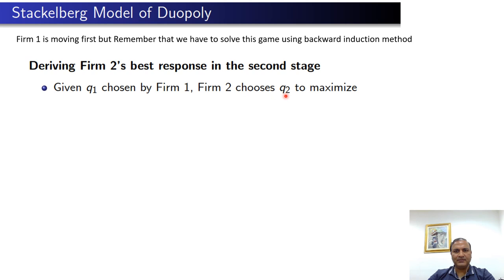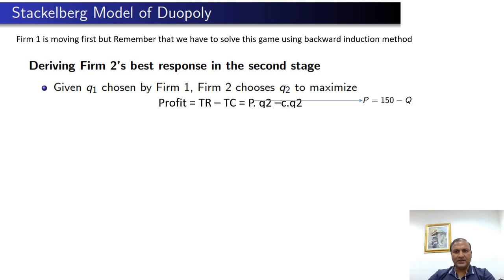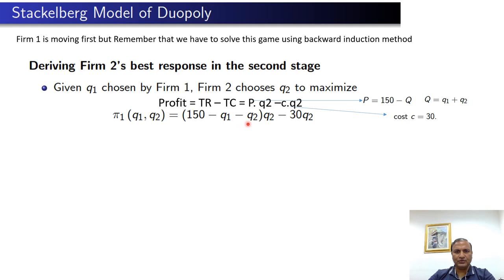The profit is total revenue minus total cost, where total revenue is price multiplied by quantity and total cost is per unit cost multiplied by quantity. Recall that price equals 150 − Q and Q = q1 + q2. We substitute this into the total revenue equation and use cost c = 30. So the profit function of firm 2 becomes: π2 = (150 − q1 − q2) × q2 − 30 × q2.